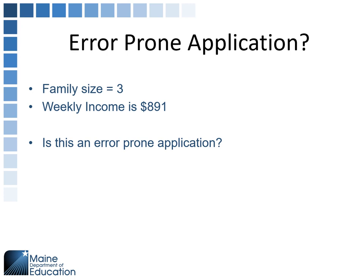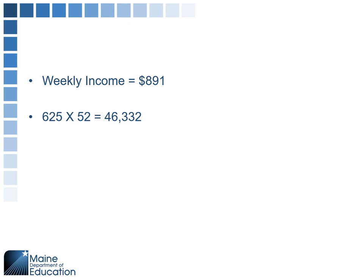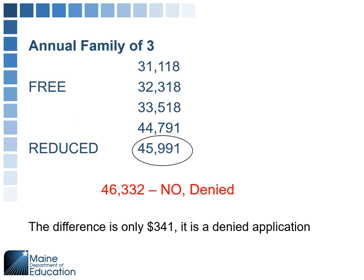Another example: family of three, weekly income of $891. Is this error prone? First, you have to convert to annually since there's no weekly error prone guidance. We take $891, multiply by 52, and get $46,332 annual income. It is not an error prone application — it's actually a denied application. Since we're only looking at approved free and reduced applications, even though the difference may only be $341, because it was denied, it's not part of the sample pool and is not considered error prone.